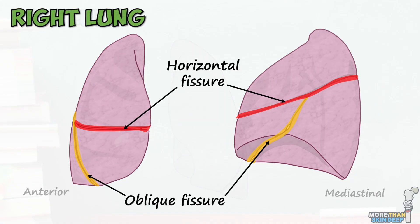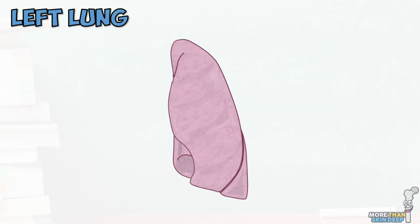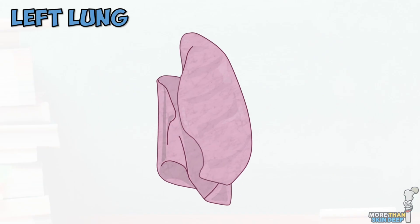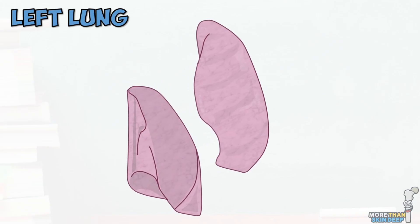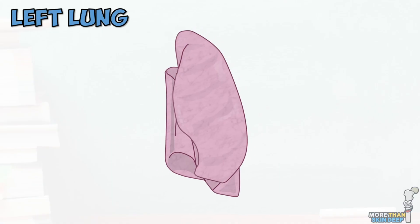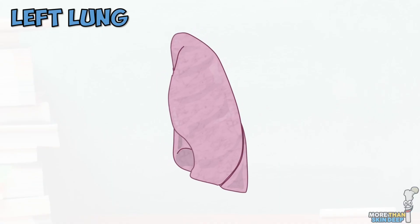Looking at the left lung, we can see it's a little smaller than the right, and it has only two lobes and only one fissure. This is because the apex of the heart projects into the left side of the chest, reducing the space available for the lung. We can see this indent on the anterior border of the left lung where the heart sits, known as the cardiac notch.